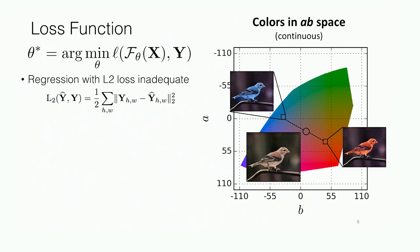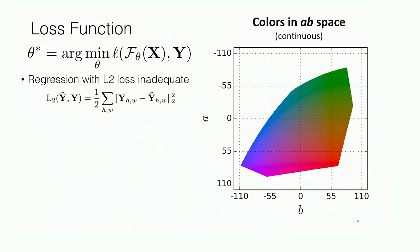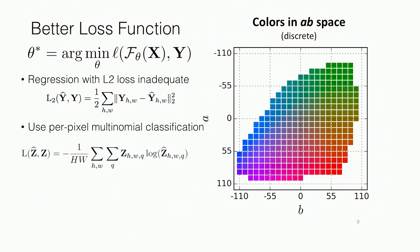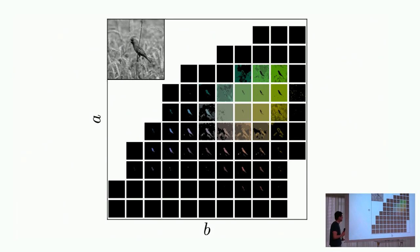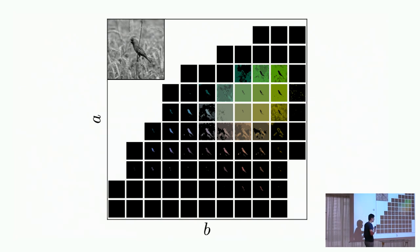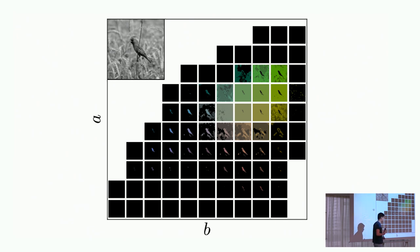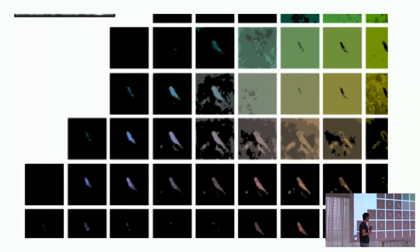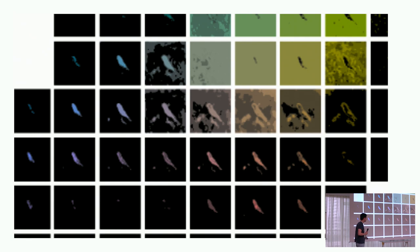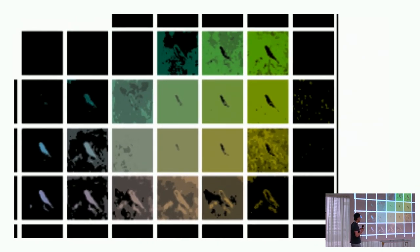Our solution was to reformulate the problem as one of multinomial classification. Instead of predicting the specific color for every pixel, we instead predict a distribution of possible colors it could be. Each tile represents one of the possible colors in the output space. Within each tile, each pixel with high lightness indicates high probability of that pixel being that color as predicted by the network. We see the network predicting the bird is blue, red, maybe purple, and the background vegetation is green or brown, maybe yellow.